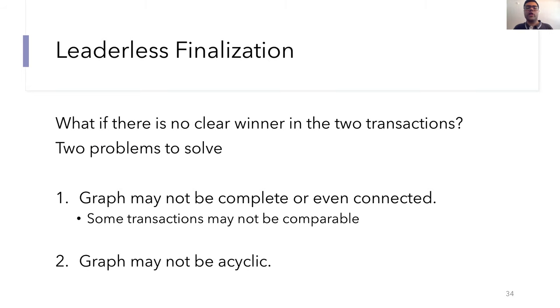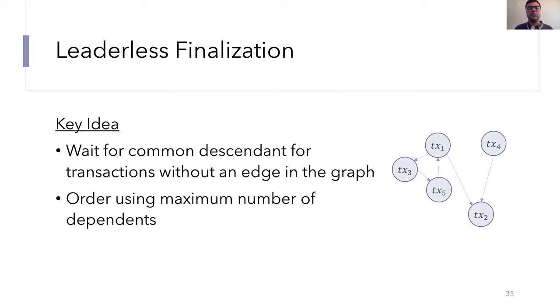Okay, so what if there's no clear winner? What if there's not one of these transactions that occurs before the other a large number of times? This will correspond to there not being an edge in the graph between these two transactions. Essentially, there's two main problems that we need to solve. The first problem is that the graph may not be complete or even connected. So this means that some transactions may not be comparable as of now. To retrieve a total ordering from this graph, we need some way to compare these transactions. The other problem is that the graph may still have cycles, courtesy of the Condorcet paradox.